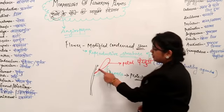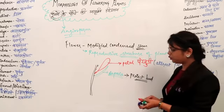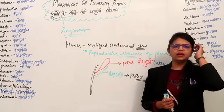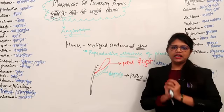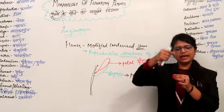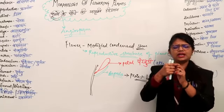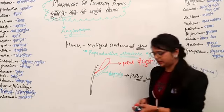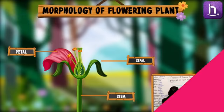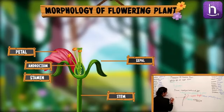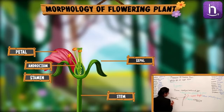Now let's talk about the next part. If we look at the flower of Madar, we see first there are Sepals, then pink leaves, then a small stalk-like structure called Dundi. We call this structure Androecium.